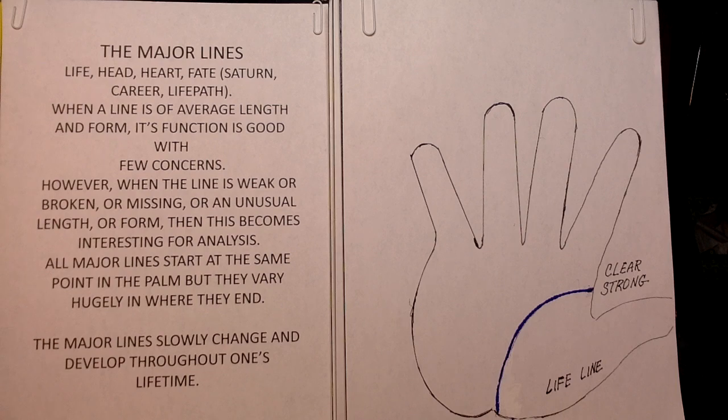However, when the line is weak or broken or missing or an unusual length or form, then this type line becomes interesting for analysis. You have something to say about it. All major lines start at the same point in the palm, but they vary hugely in where they end. And that applies to your left hand and your right hand. Of the same person, you will see changes.